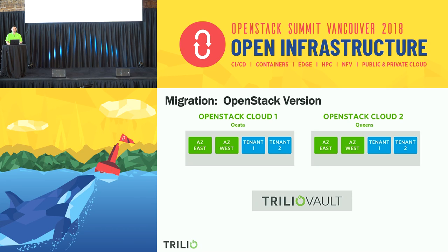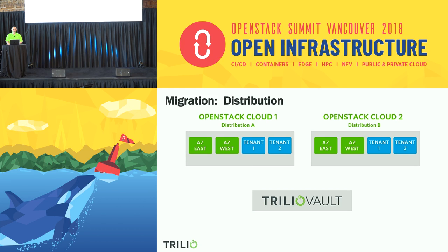From an upgrade or OpenStack version migration, let's say you're on Ocata and looking to migrate over to a new cloud on Queens — same idea. Back up everything from a tenant workload perspective, restore that back into a new cloud on Queens. Same idea for distribution: if you're on upstream and want to jump in with one of the main distributions, you can do that type of migration as well.